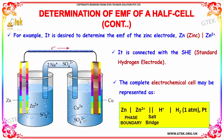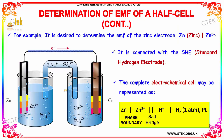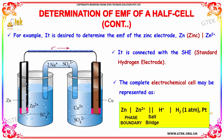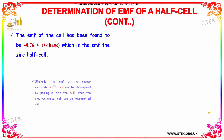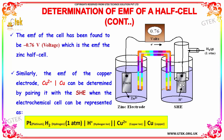For example, to determine the EMF of the zinc electrode, it is connected with the standard hydrogen electrode. The complete electrochemical cell may be represented as: Zinc | (phase boundary) | salt bridge | H₂, Pt (platinum). The EMF of the cell has been found to be minus 0.76 volts, which is the EMF of the zinc half cell.